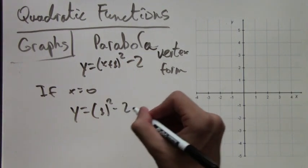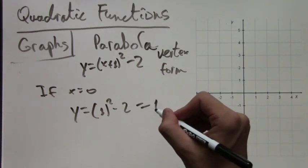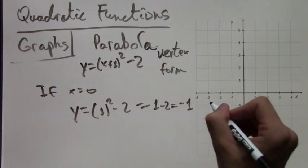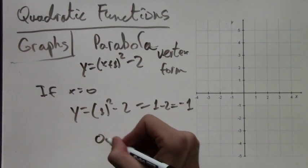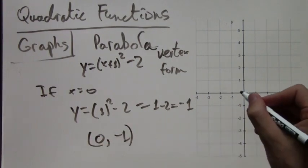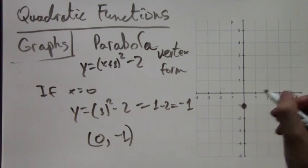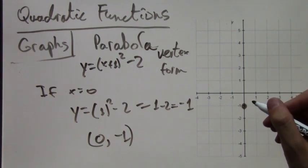If x equals 0, then y equals... well, 0 plus 1 is 1, so 1 squared minus 2. That's 1 minus 2, which is negative 1. So the point (0, -1) lies on this parabola. I've marked it on the coordinate plane.